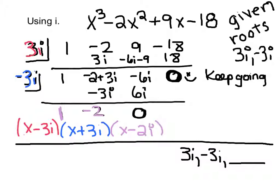So the other root is not -2i, just -2. So the other root is positive 2.